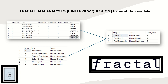Hello everyone, welcome back to my channel Data Sculptor. Today we are going to cover another interesting SQL question that was asked in a Fractal data analyst interview. We have some Game of Thrones datasets. The first table is 'battles', with columns: battle number, name, attacker king, defender king, attacker outcome, and region. Below is the 'kings' table with king and house columns. We'll examine the expected output and the logic behind it in SQL Server Studio.